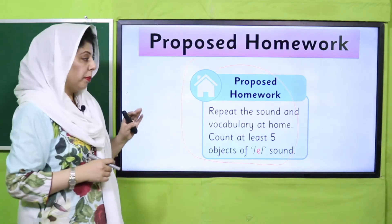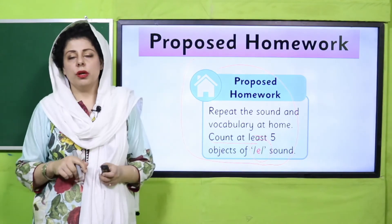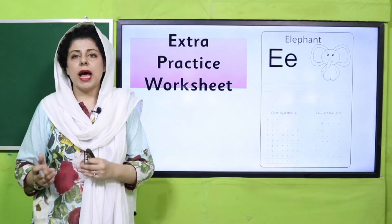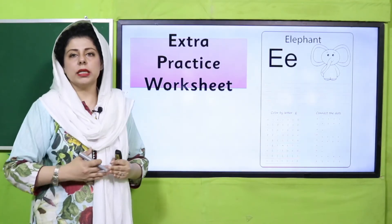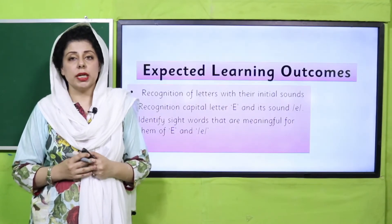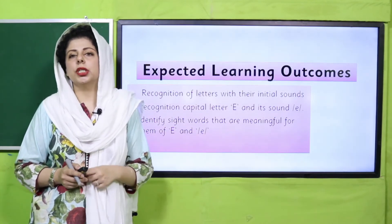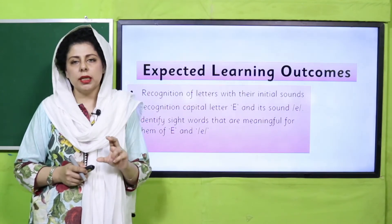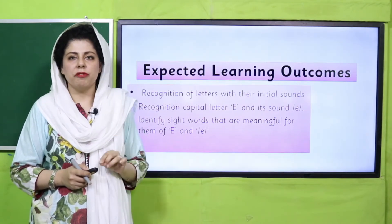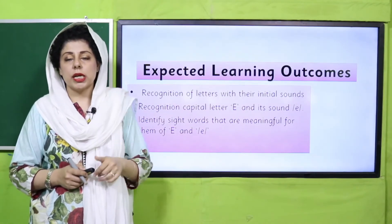When you go home, go to the kitchen and see: do you have eggs in the kitchen, and an eggplant? You need to find and look at these, then come back and share with us tomorrow whether you found things starting with this sound and letter. Teachers, the best alternative for letter recognition is to give children newspaper cuttings so they can circle the letter E being taught today — this will make it easy to understand whether they have recognized the letter E.